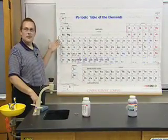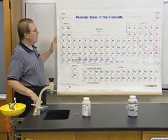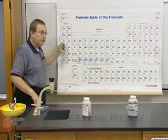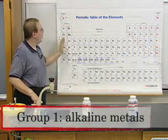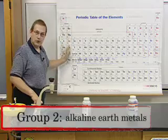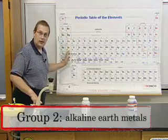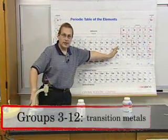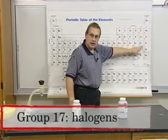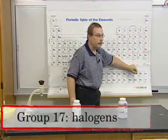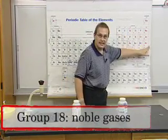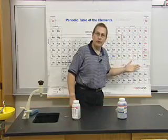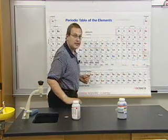This is the periodic table. The periodic table is broken down into individual groups: Group 1, the alkaline metals; Group 2, the alkaline earth metals; Groups 3 through 12, the transition metals; Group 17, the halogens; and Group 18, the noble gases. These are the named groups and they each have their own properties.